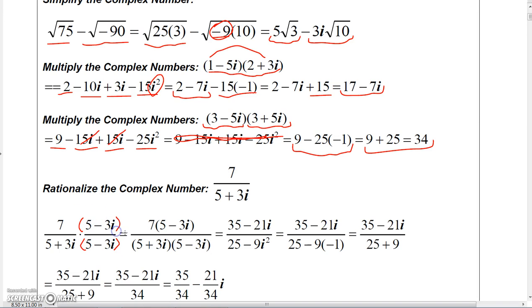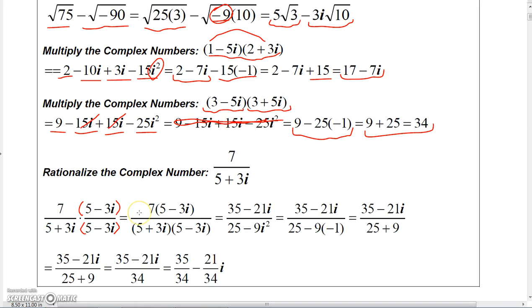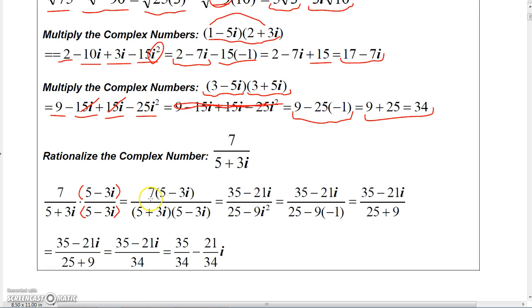...if you're going to do that, you have to multiply both the top and the bottom by 5 - 3i so that you're not changing the value of the number.